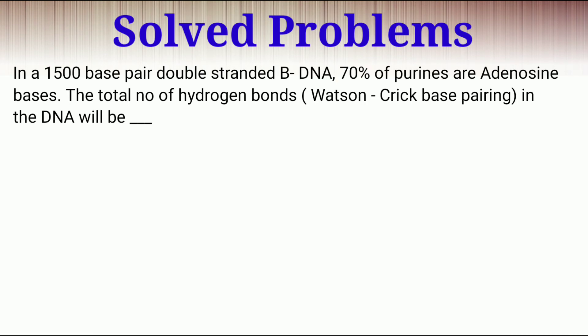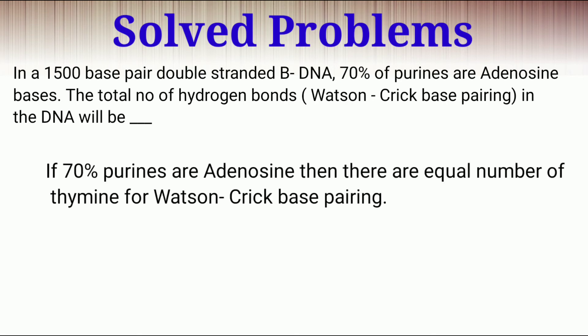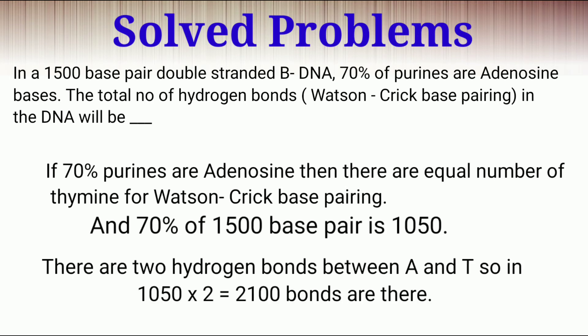And in another problem that appeared in GATE examination, 15,000 base pair double stranded B-DNA, 70% of purines are adenosine bases. Then you have to find out the total number of hydrogen bonds present in this DNA. We know that the 70% of 15,000 base pair of DNA that means 1050 bases are adenosine. So there is 1050 thymine residue is also present and we know that between adenosine and thymine there are two hydrogen bonds. So number of hydrogen bonds between adenosine and thymine are 1050 into 2 that is 2100 hydrogen bonds are present.